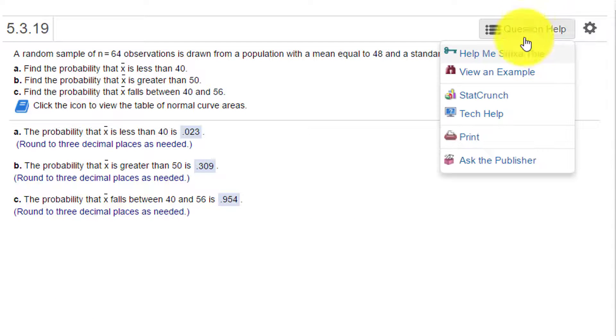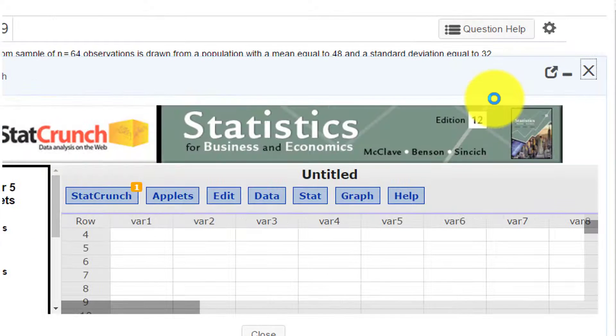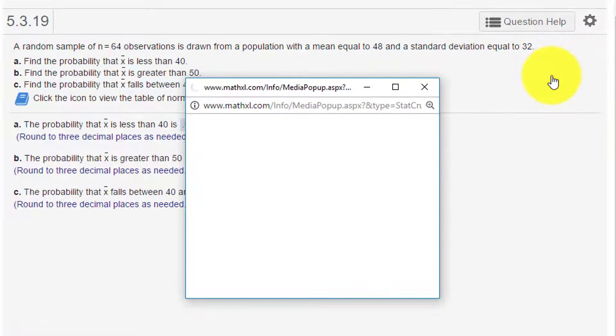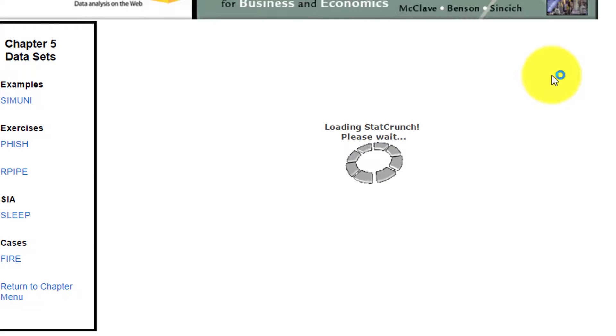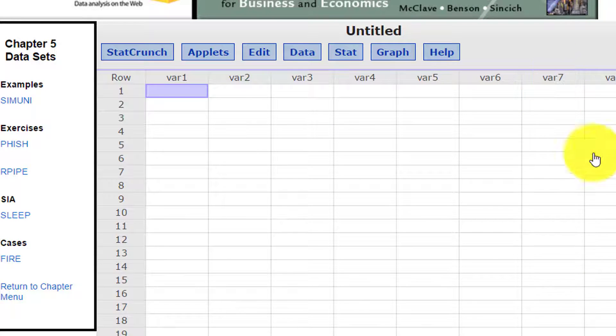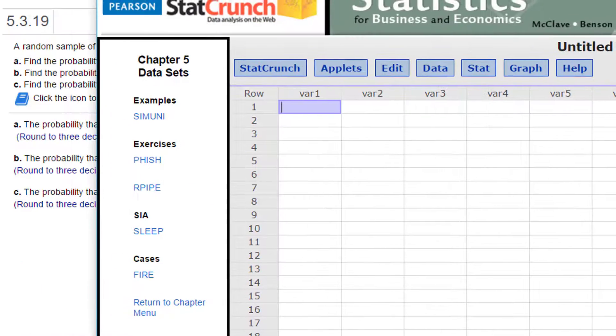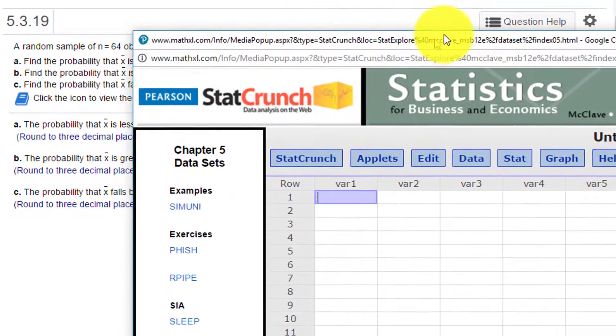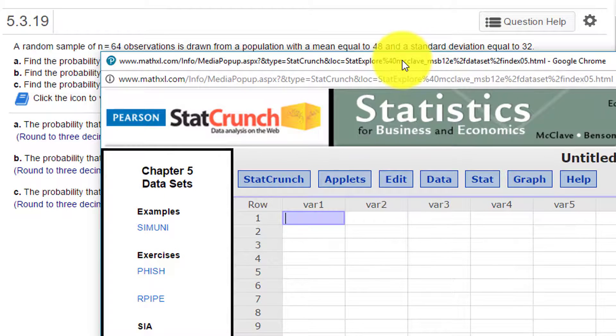I'm going to go to question help and click on StatCrunch and it opens up. I'm going to click on this little icon there to expand it into its own window, which is a little bit easier to use.